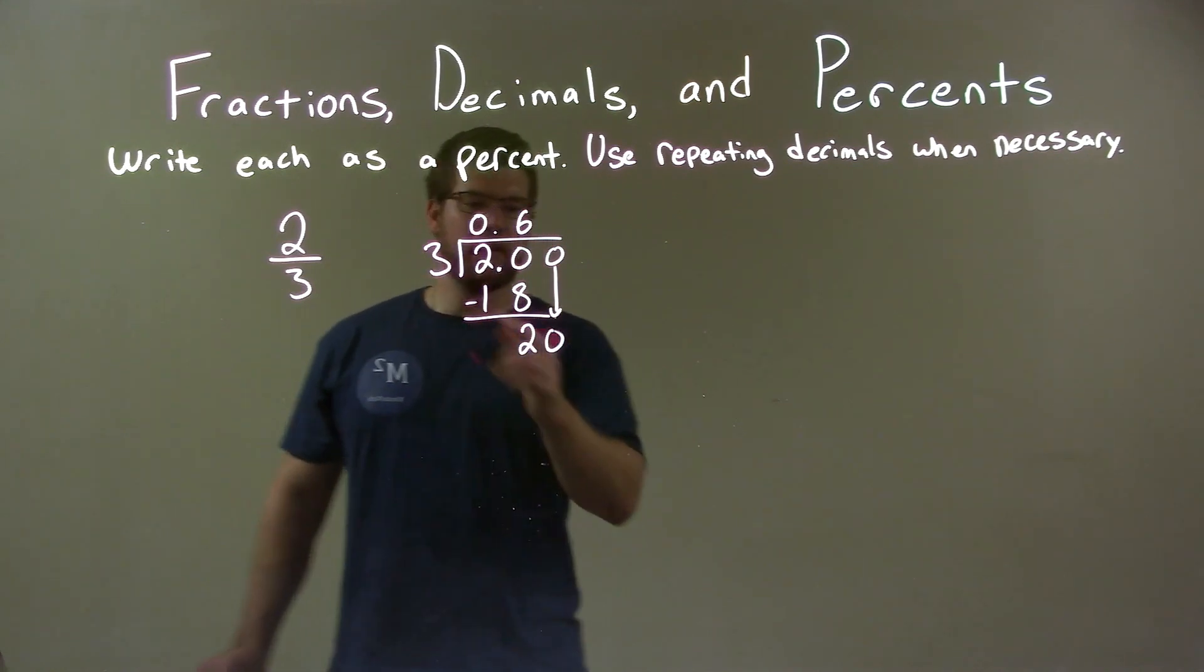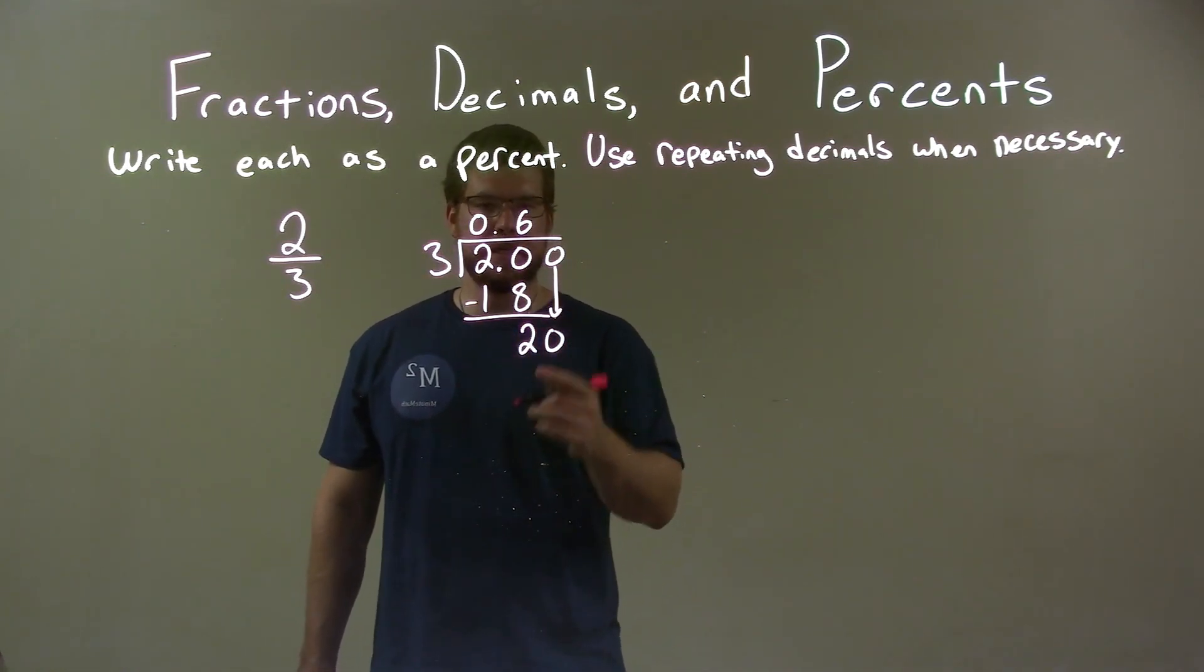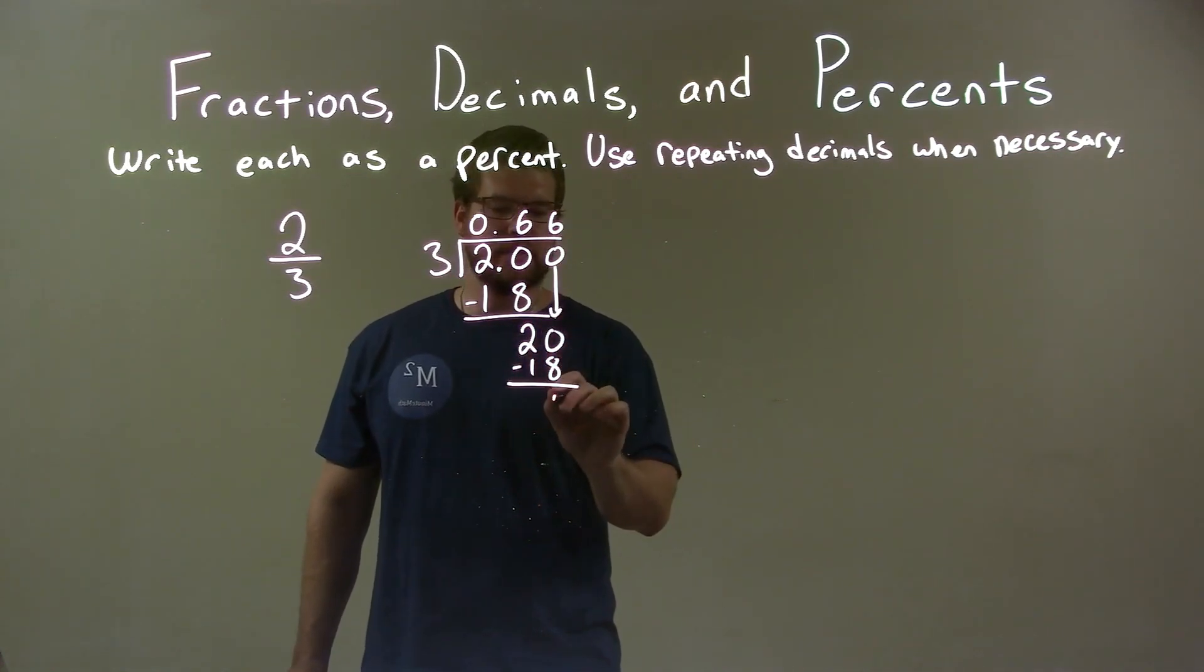Another place value. Three goes into twenty, well this is kind of repetitive. We can see it. Six times three is eighteen. Subtract it, twenty minus eighteen is two.